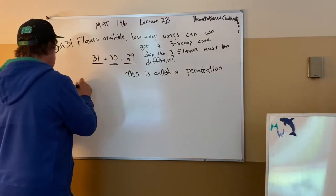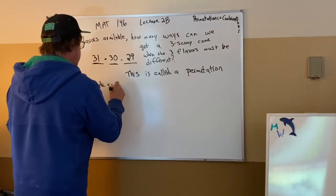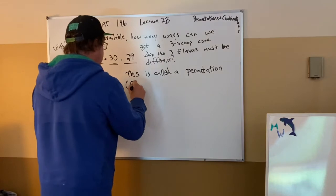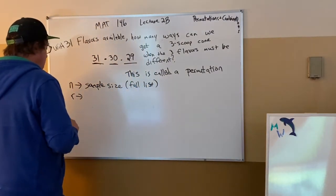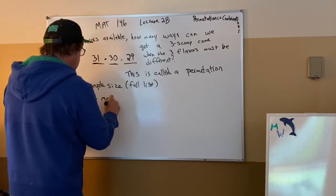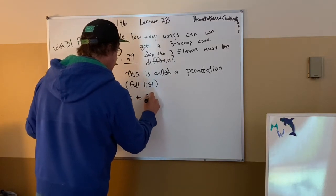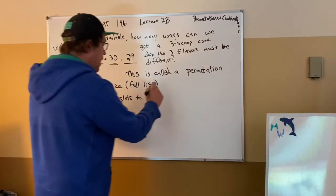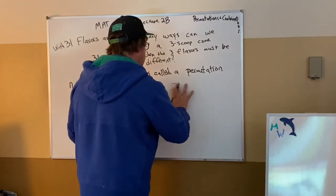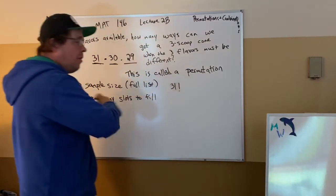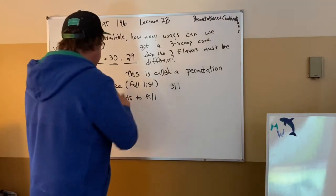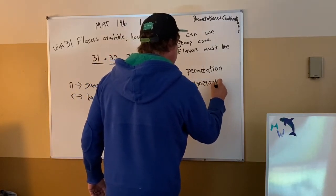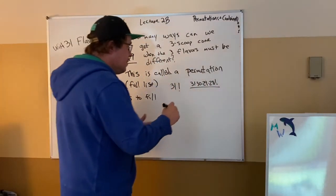N is the sample size — what you can draw from, the full list. R is how many slots to fill. What we had to do was use 31 factorial to get where we needed to be. 31 factorial is actually 31 times 30 times 29 times 28 factorial. Down here we have 28 factorial, and as long as they go from 28 down to 1, they are identical — so we can cancel those out and get 31 times 30 times 29.